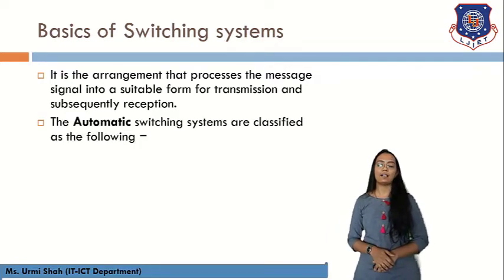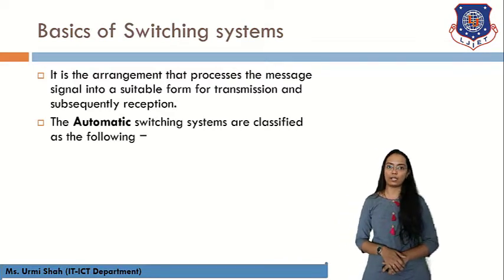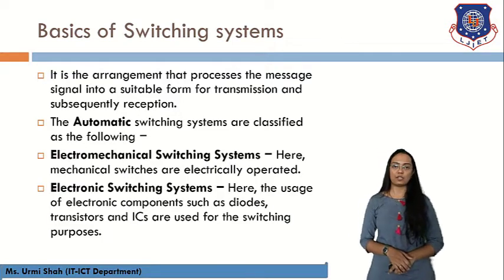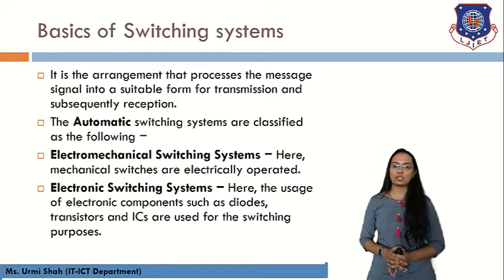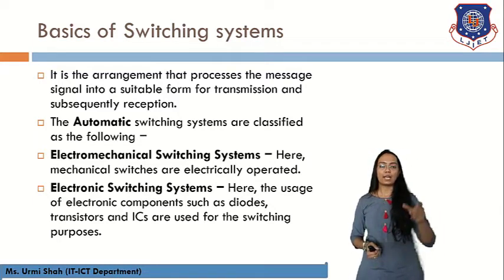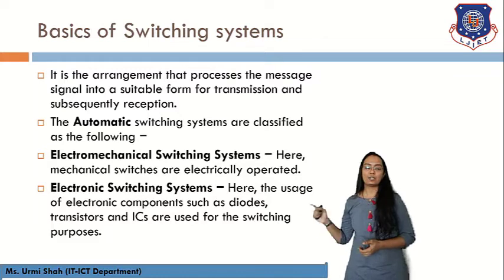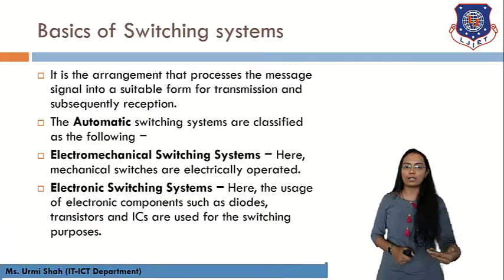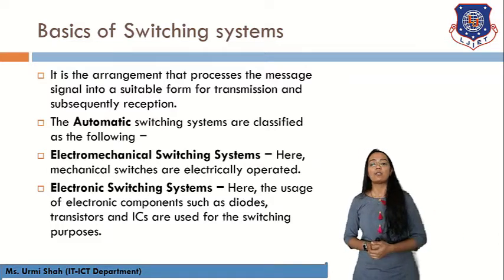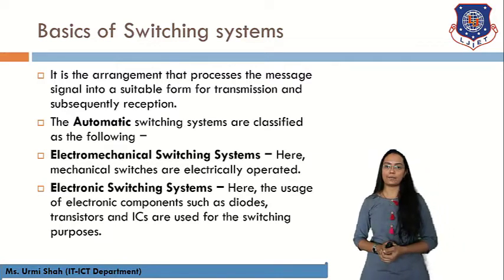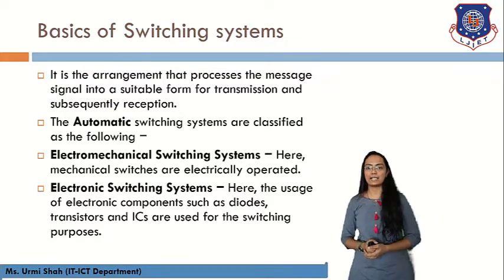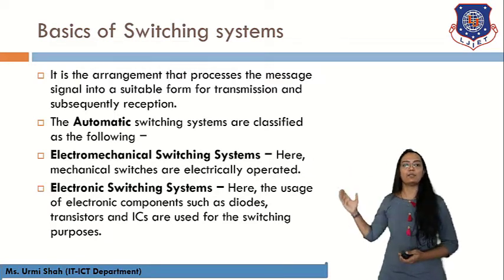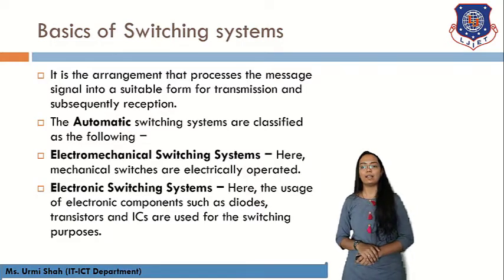Automatic switching systems are classified as electromechanical and electronic switching systems. Electromechanical switching systems have mechanical switches that are electrically operated. Electronic switching systems use electronic components such as diodes, transistors, and integrated circuits for switching operations.